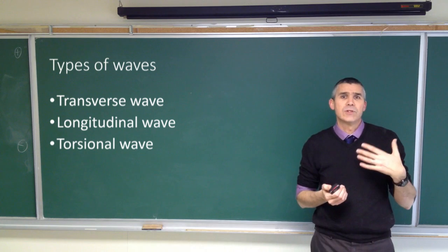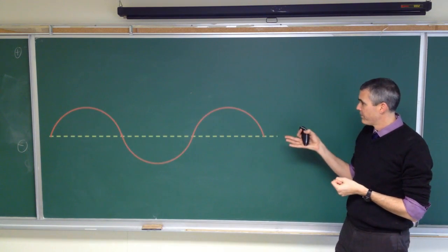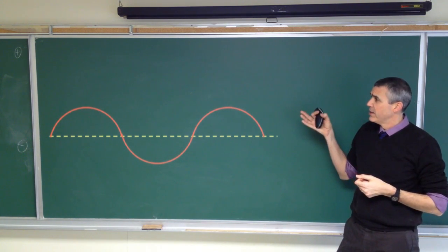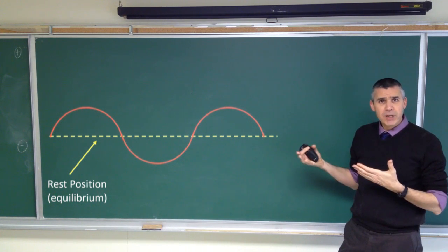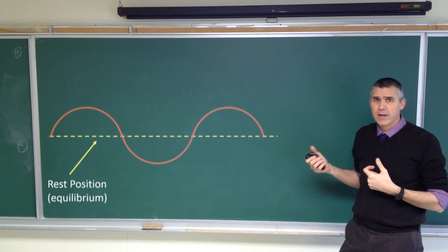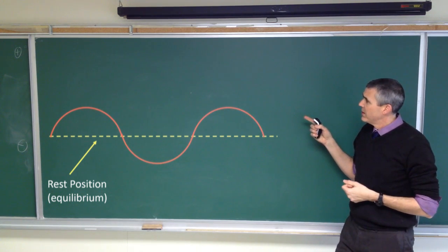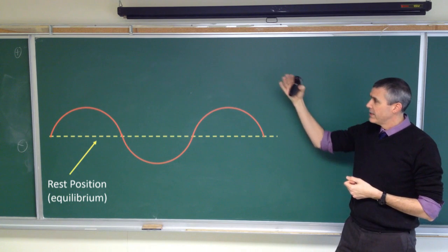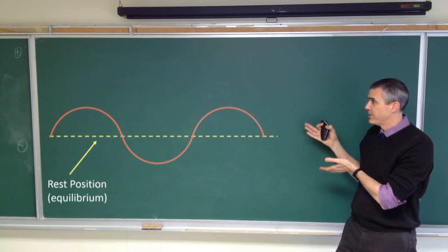So let's look at what's going on with a wave. If we look at our wave, the yellow dashed line represents the rest position, or the equilibrium position, and that's if the spring is at rest. The red line represents the wave itself. So when we generate a wave, it does that, right? It's that displacement from the rest position.